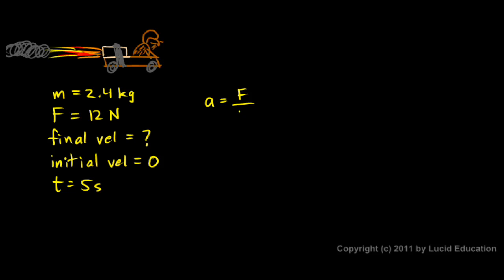So let's find the acceleration first. A will be F over M. And let's put in the numbers. 12 newtons divided by 2.4 kilograms. 12 divided by 2.4 is 5. The acceleration is 5 meters per second squared.